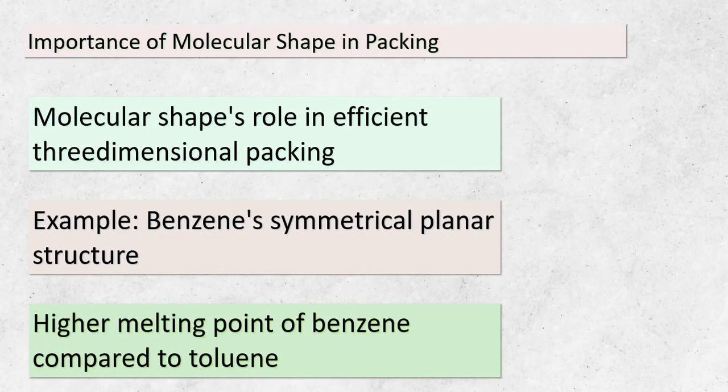Let's delve into the intriguing concept of molecular shape and how it influences the way molecules fit together in three dimensions. Molecules are like tiny puzzle pieces, and their shapes determine how well they fit together. Take the example of benzene, a fascinating molecule composed of 6 carbon and 6 hydrogen atoms. Its symmetrical, planar structure makes it incredibly efficient in packing, and this efficiency translates to a higher melting point compared to toluene. Toluene has a slightly different structure due to the replacement of one hydrogen atom with a CH₃ group — this change in symmetry affects its packing in a crystal lattice, leading to a lower melting point.